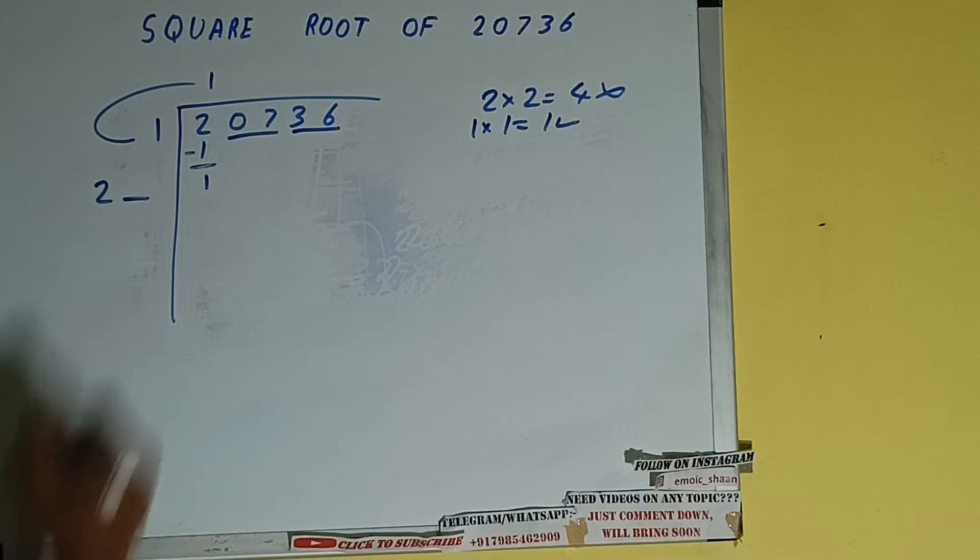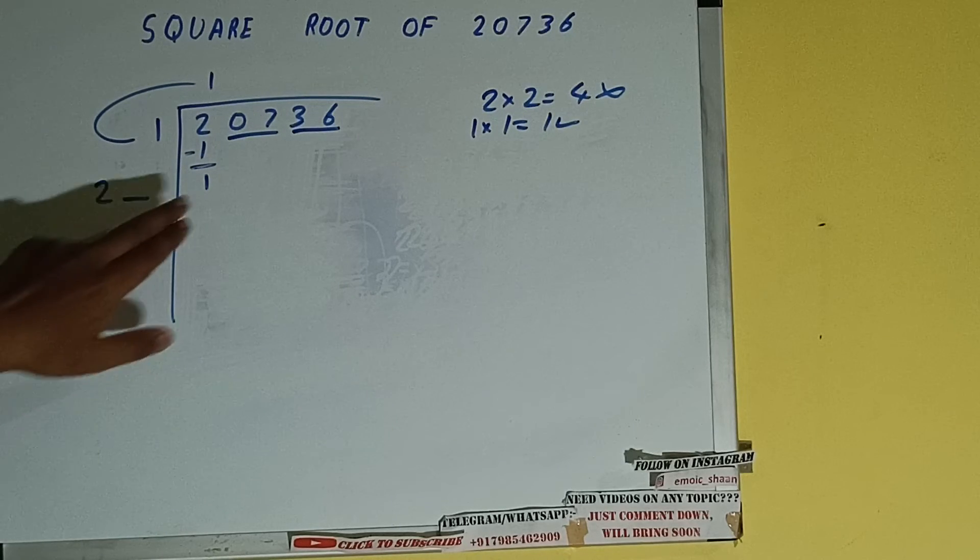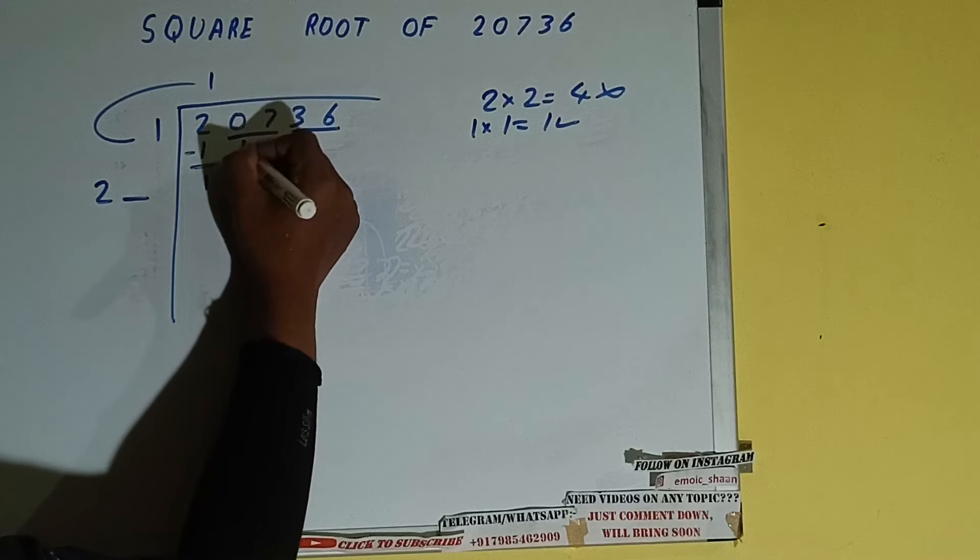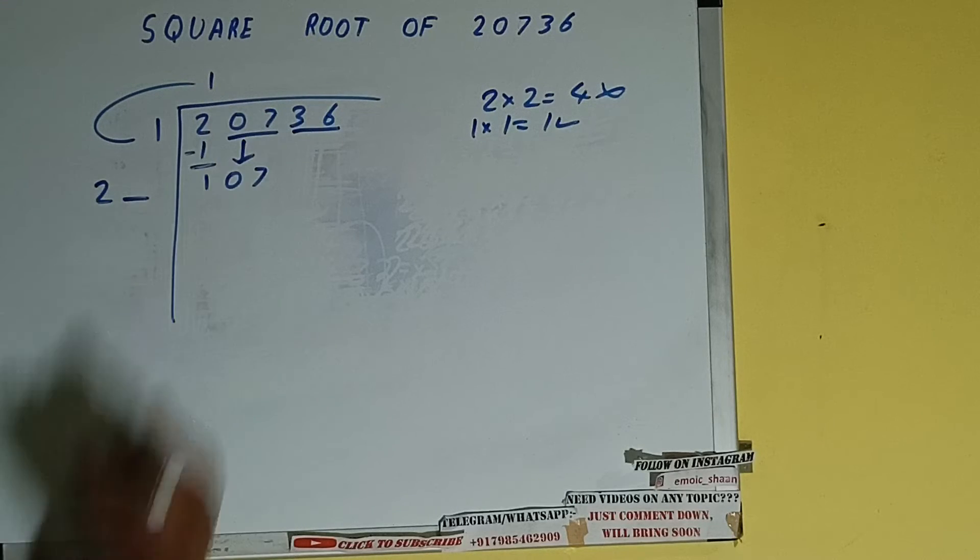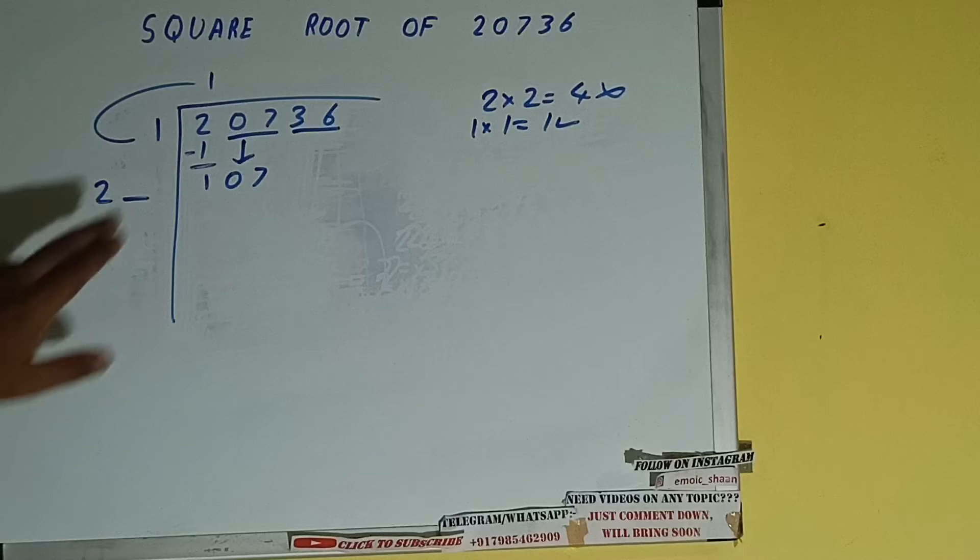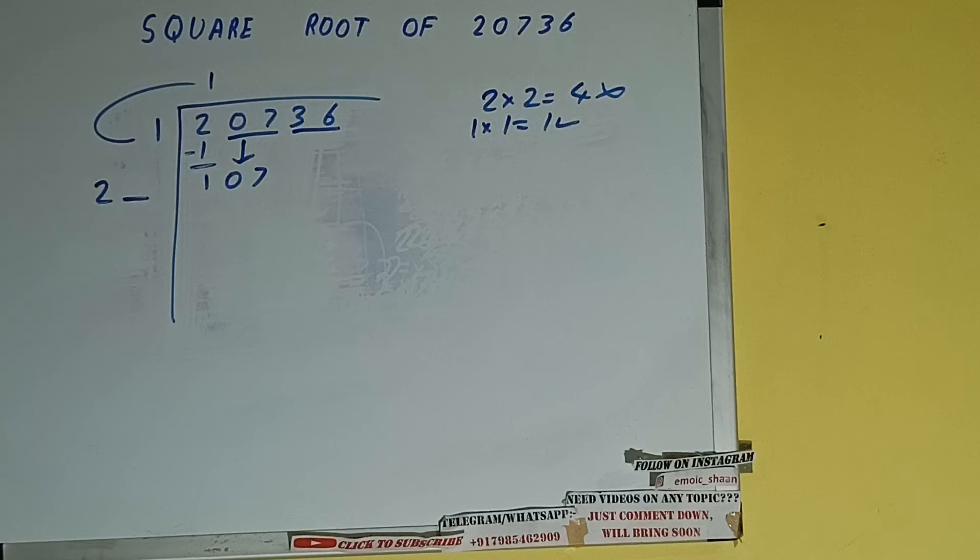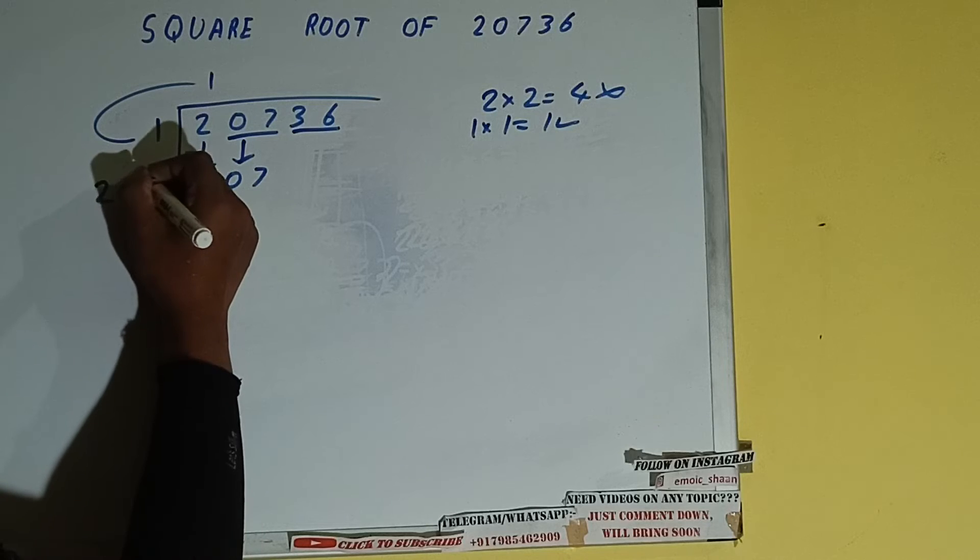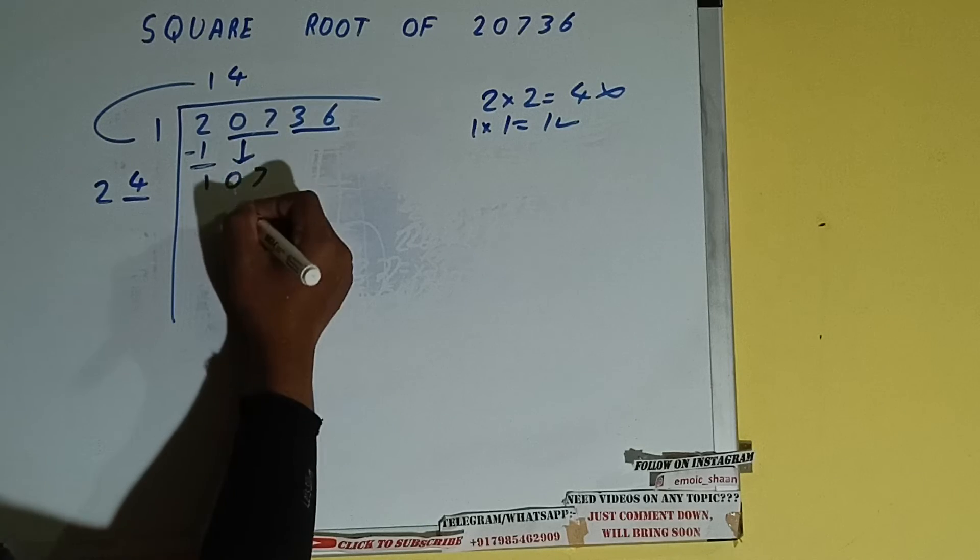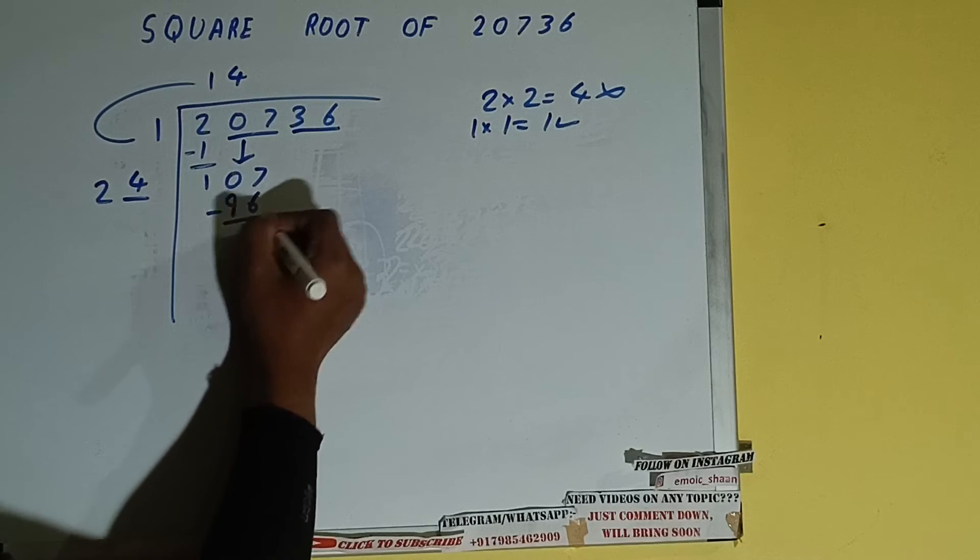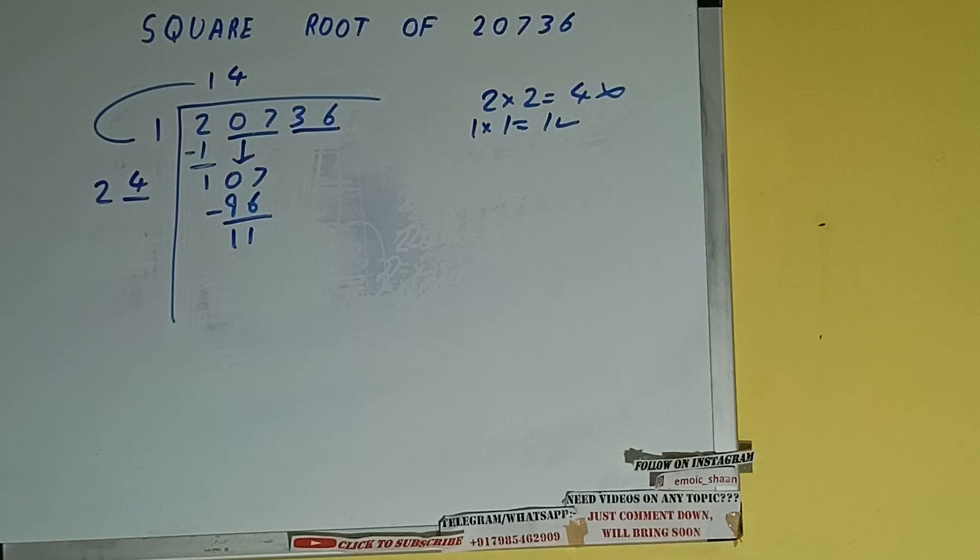Write it here and keep a digit extra, and this number we need to make it big. So bring the next pair down and it will be 107. Now whatever number we write here we need to write here also.